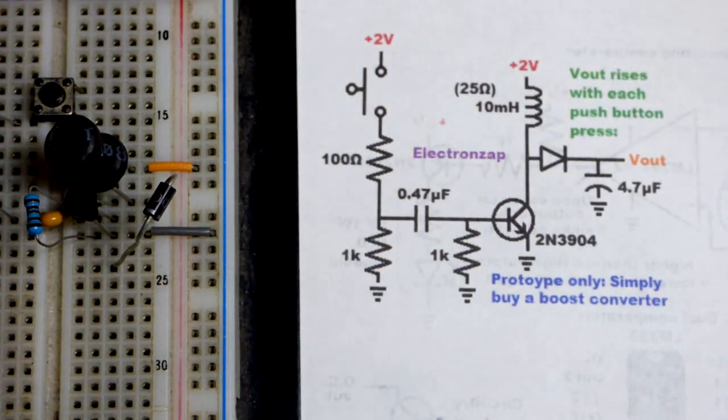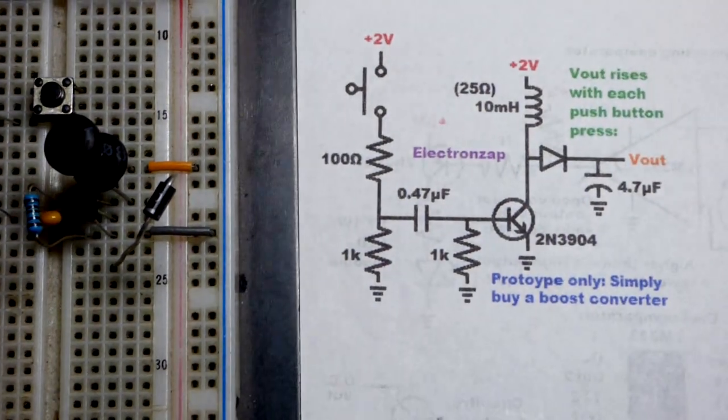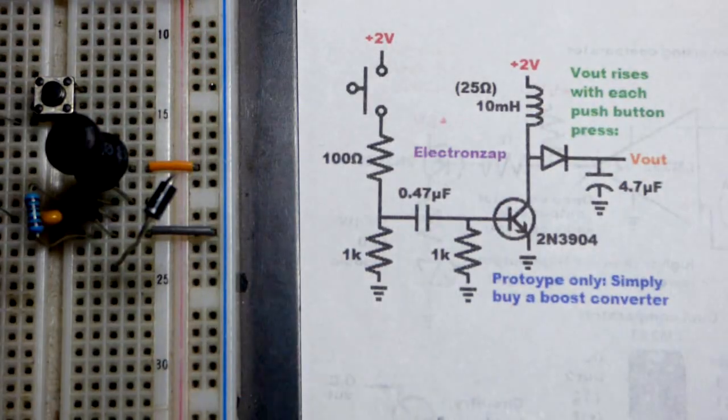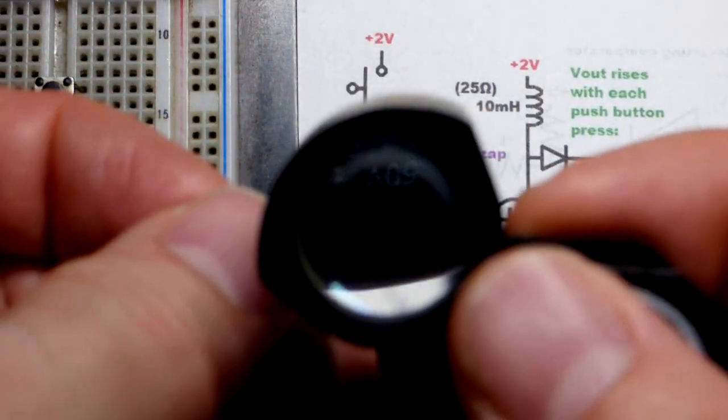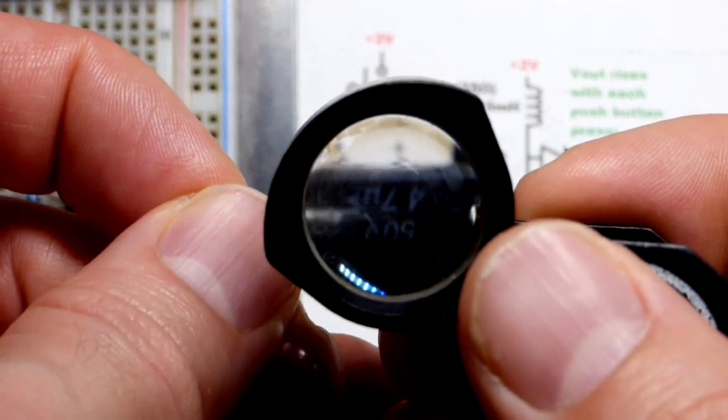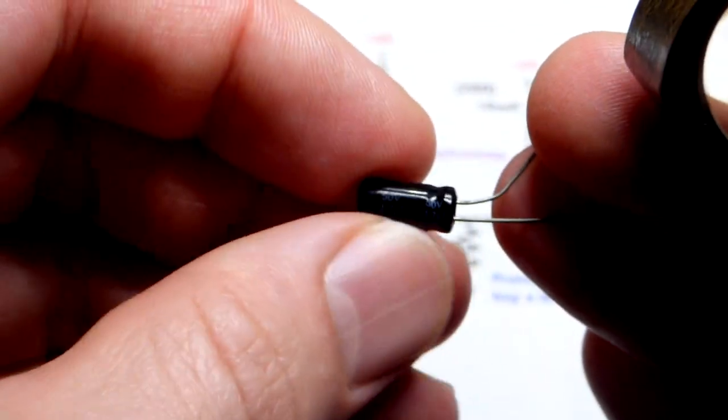So yeah, we'll look at this capacitor. Probably need to move the lamp there to get the light better. Maybe we won't be able to get a good look at this, at least in this shot. But yeah, there you can see 50 volts and then 4.7 microfarad.